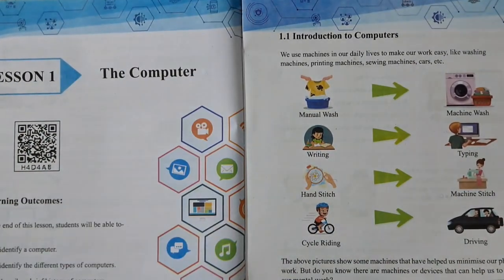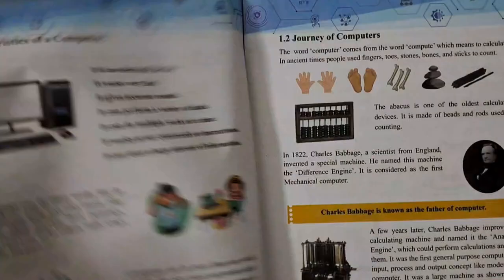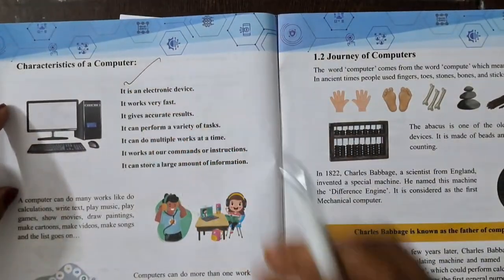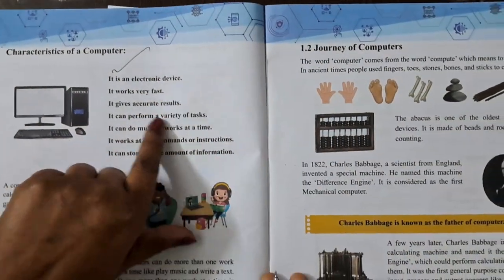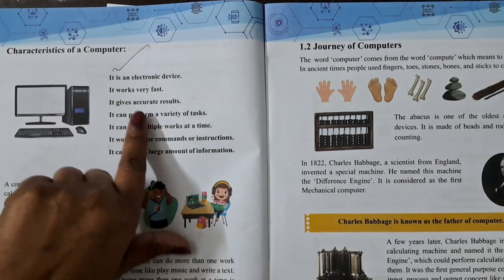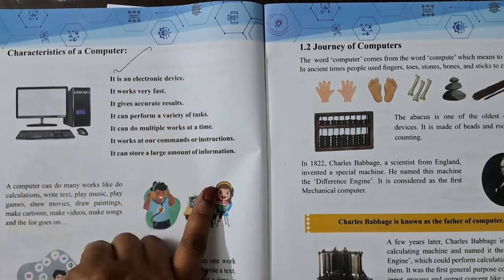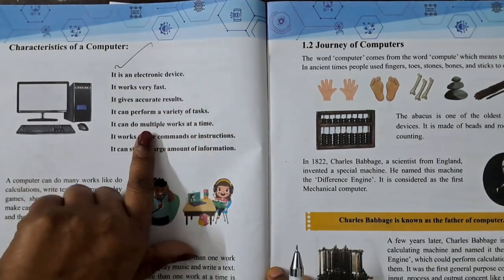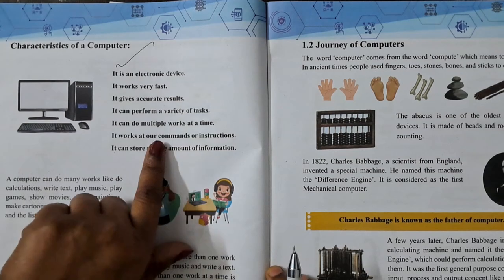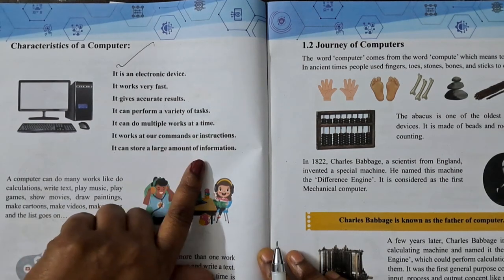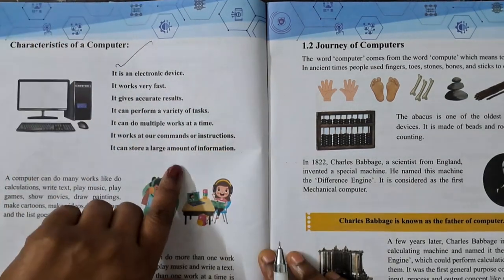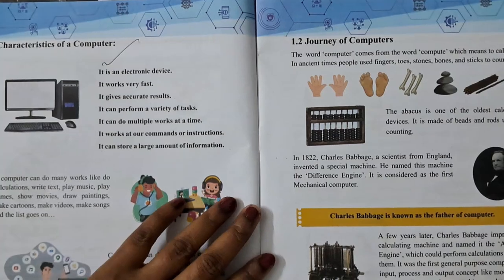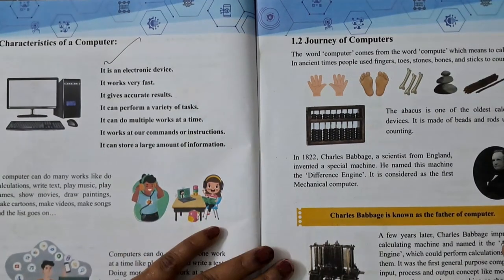Introduction to computer. First of all, the characteristics of the computer: it is an electronic device, it works very fast, it gives accurate results, it performs various tasks, it does multiple works at a time, it works on commands, and it stores a large amount of information.